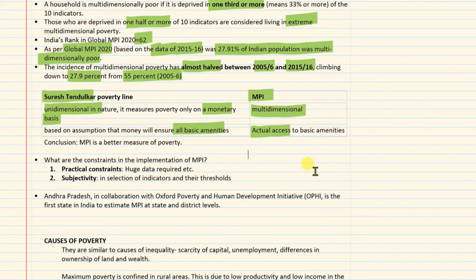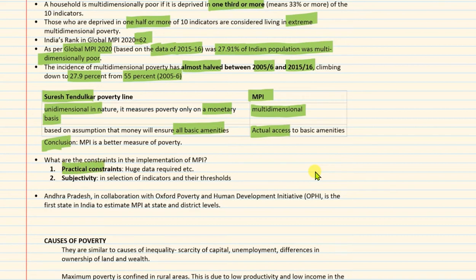Therefore, we can conclude that MPI is a better measure of poverty than monetary measures such as the Tandulkar Committee. If MPI is a better measure, then why is India not calculating MPI and still using monetary measures? There are two important reasons. First is practical constraints: to calculate MPI, we need data on different indicators across different dimensions, which requires huge data collection, more manpower, more data analysis, making the whole process very complex.